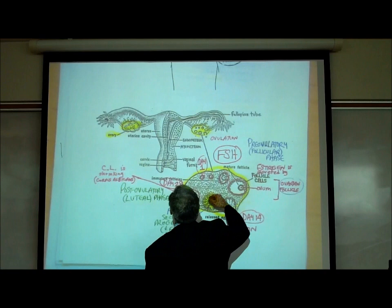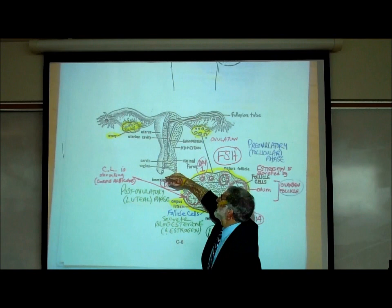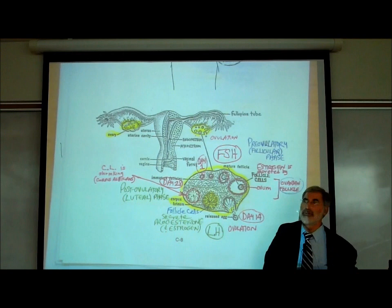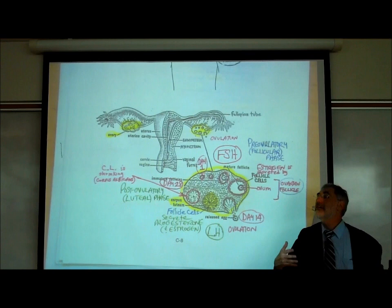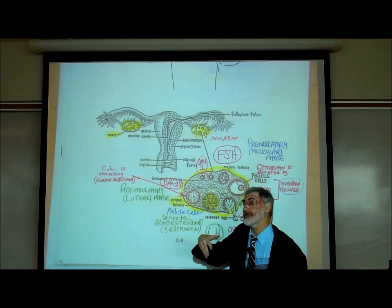This is the female reproductive system. Here are the ovaries, the fallopian tubes, and the uterus. The uterus is made up of an inner layer called the endometrium — 'endo' means inner, 'metrium' means uterus. Blood vessels grow in the endometrial lining every month to prepare the woman in case she gets pregnant, so they can nourish an embryo.